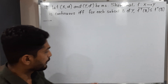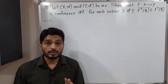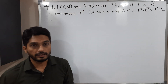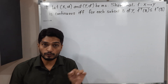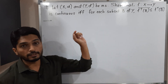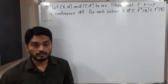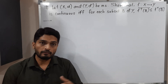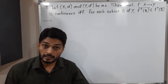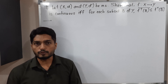In this video we are going to discuss a very interesting theorem. We have two metric spaces (X, d) and (Y, d'), and f is a function from X to Y. We have to prove that f is continuous on X if and only if a certain condition holds. Since it's an if-and-only-if statement, we must prove both directions.